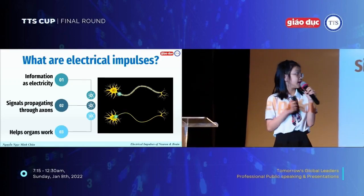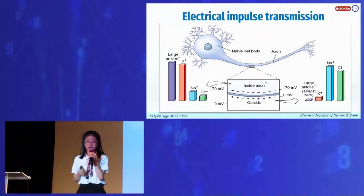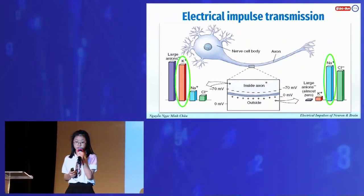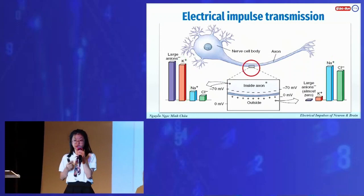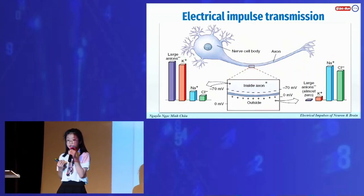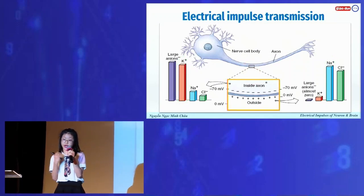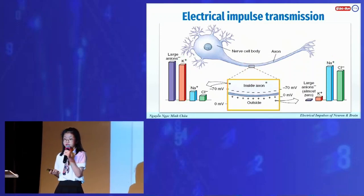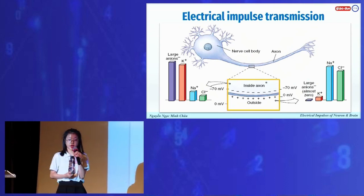The electrical impulse transmission process consists of two main chemicals: ion potassium and ion sodium. The fluid inside the neuron consists of ion potassium that is 20 times higher than the fluid outside, while the fluid outside is rich in ion sodium that is 10 times higher than the fluid inside.